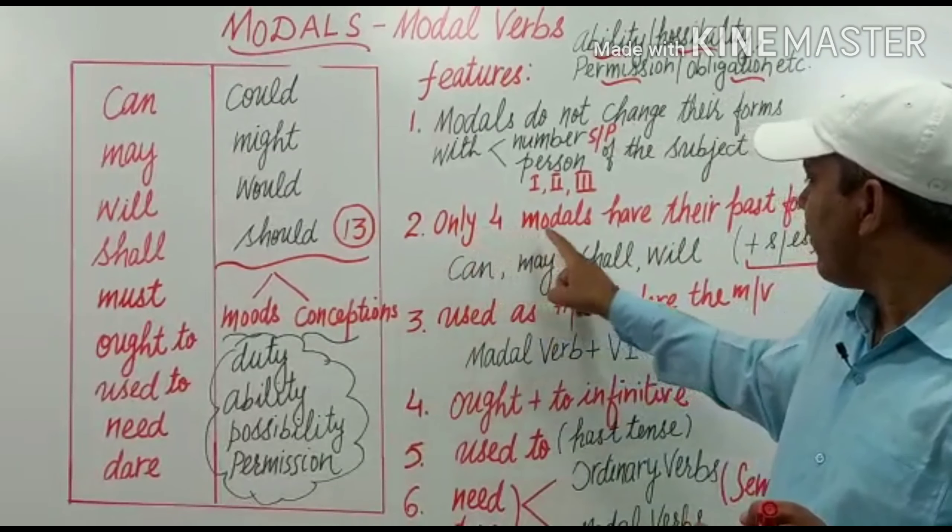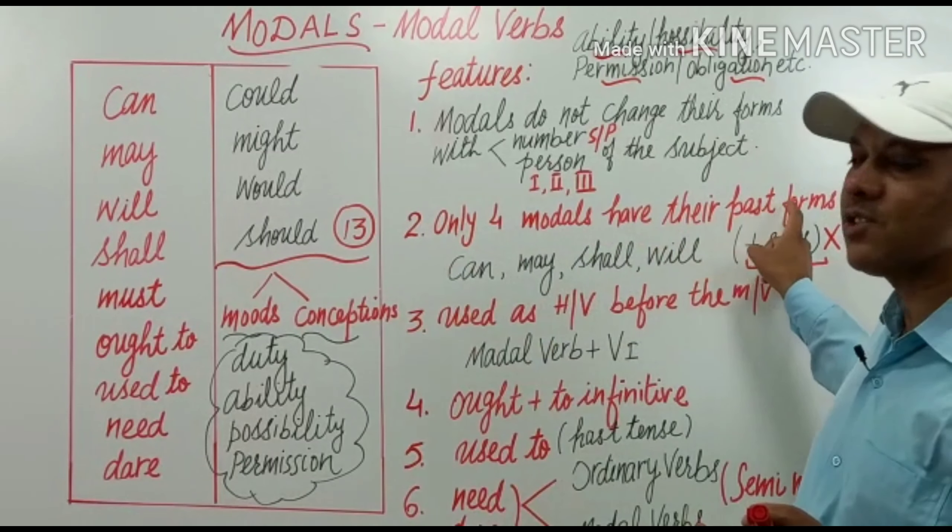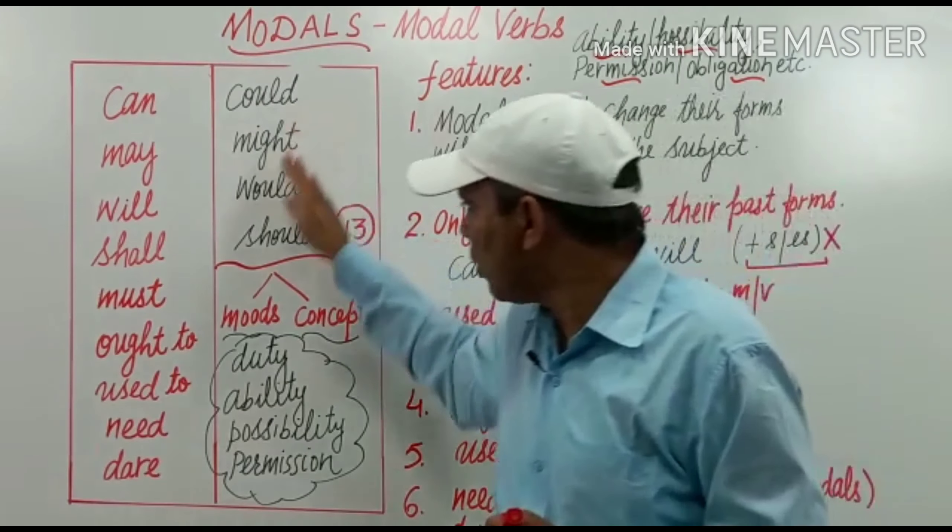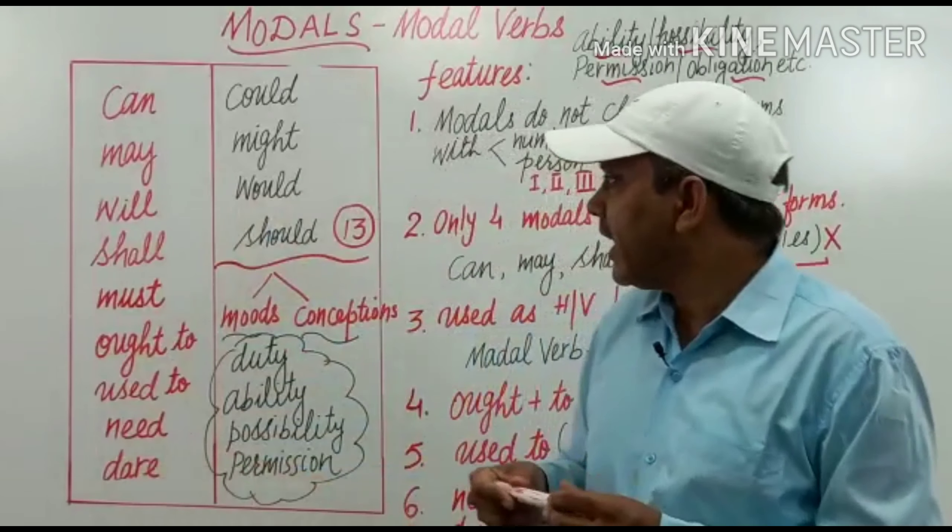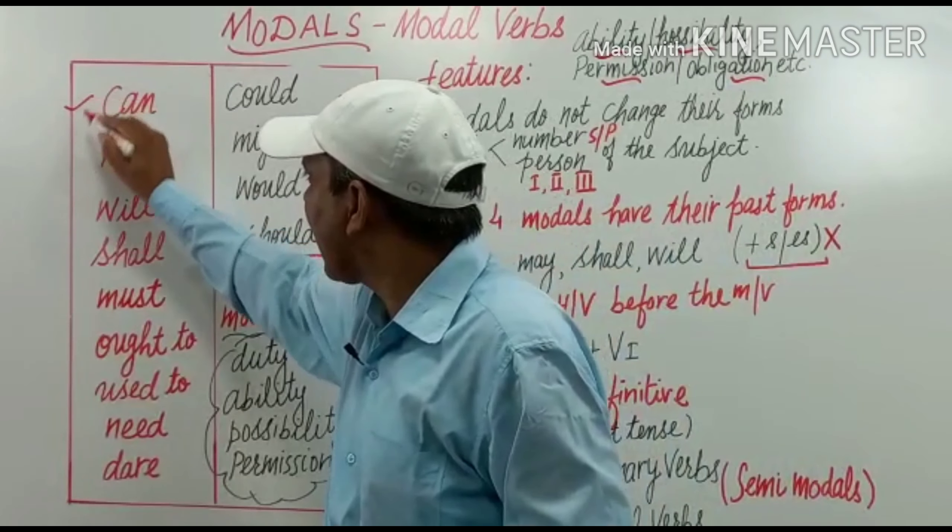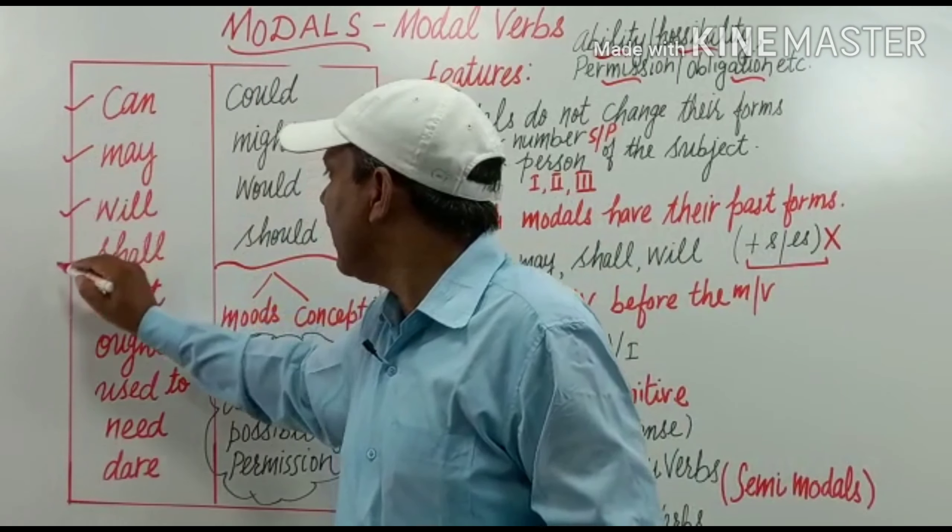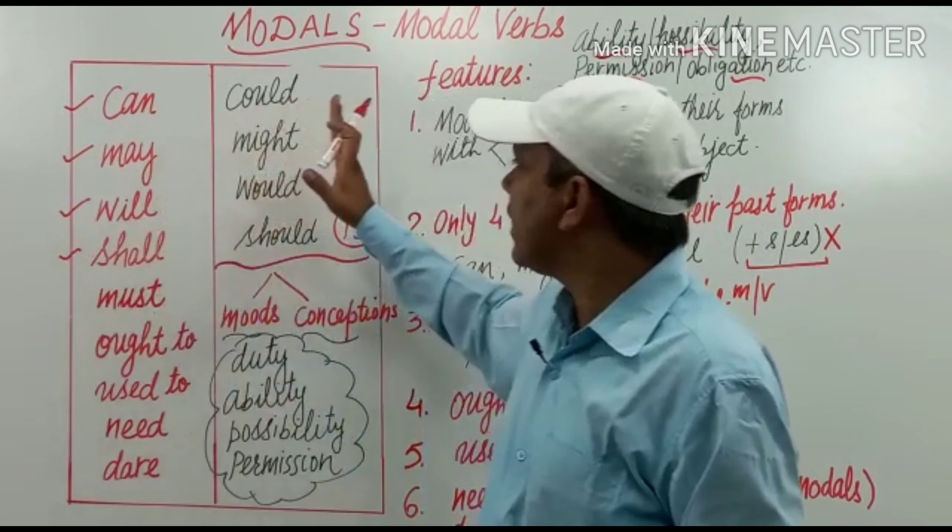Second, only four models have their past forms. Ye jo 13 models maine aapko yahan bataye, in mein se keval ye char: can, may, will, shall, they have their past forms.